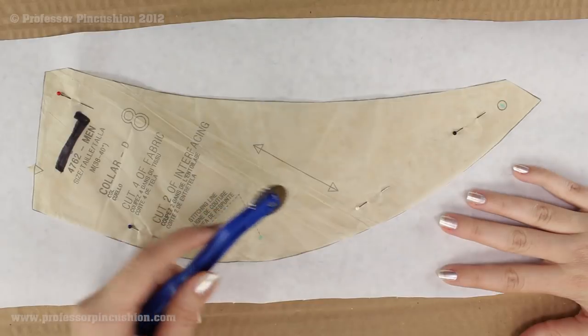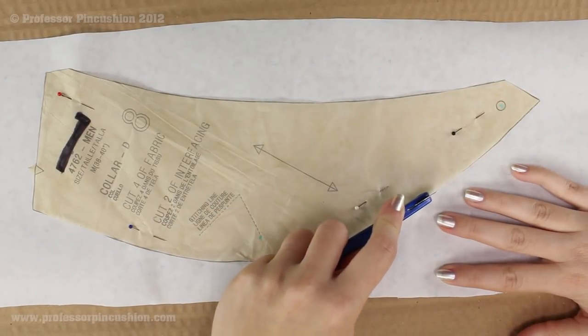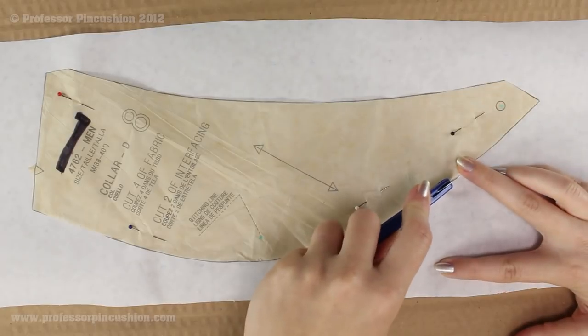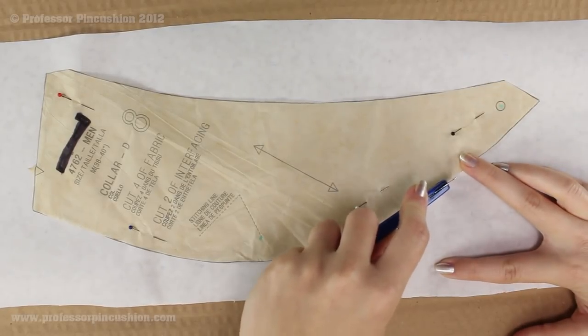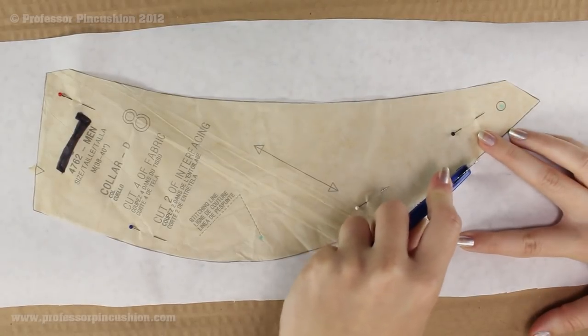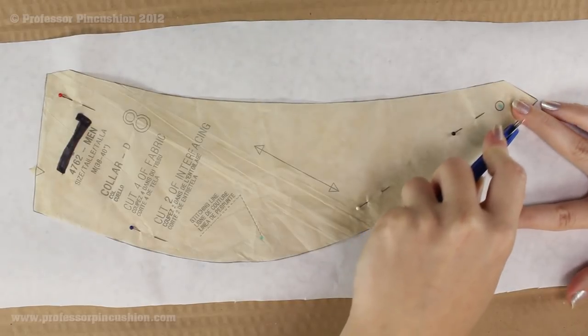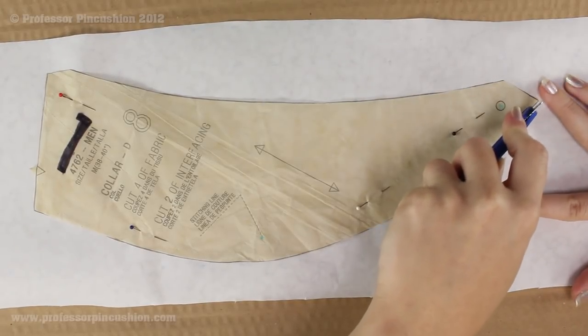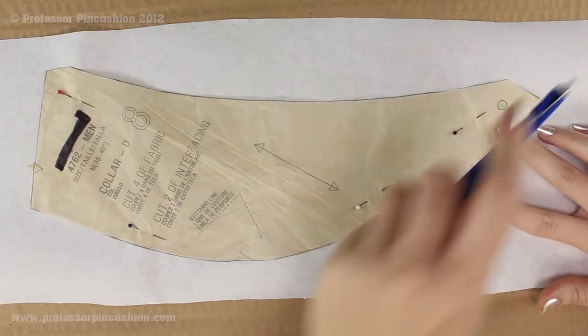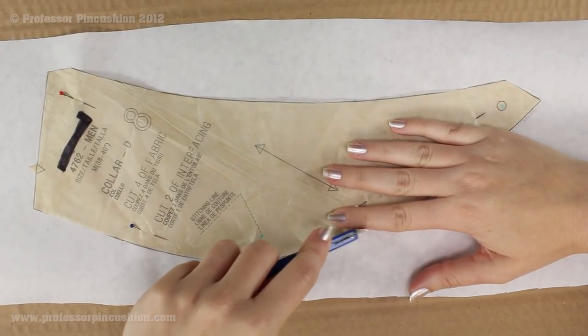I'm going to take my serrated blade and I'm going to go right along the perimeter of the pattern as close as I can get to the edge. And I'm going to press down pretty hard and the little blades will go into the cardboard and you'll get a line. And if you go around the whole thing you will make a duplicate of this pattern piece. So that's all I'm going to do is just go around the whole thing.